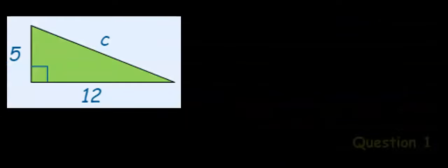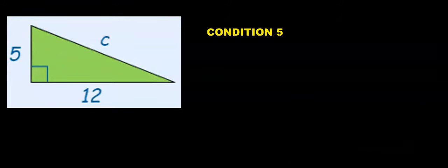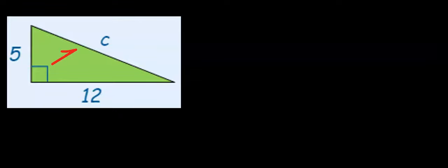Number five: to apply Pythagoras' theorem, two sides of the right-angled triangle must be known and one side is usually unknown. The first step to solve this is to identify the longer side. The longer side is usually the side facing the right angle. The next step is to write out the value of the longer side, then square it.